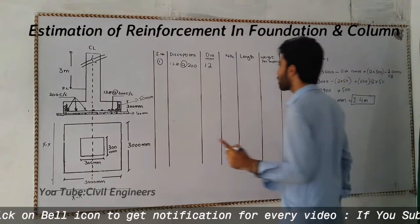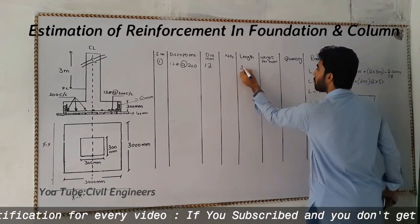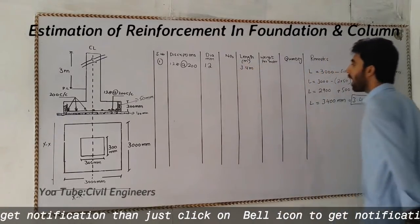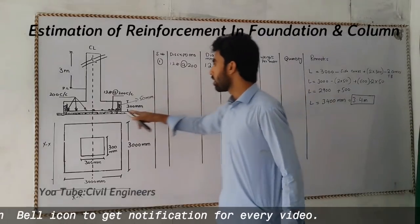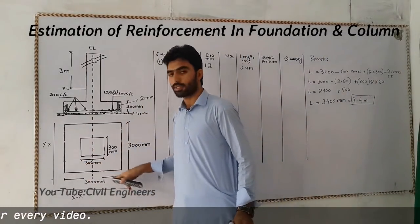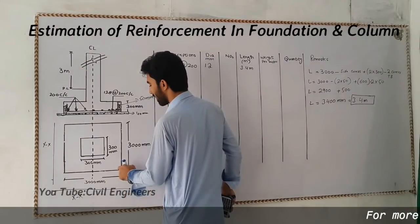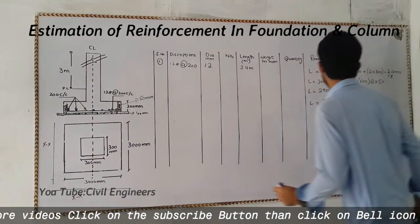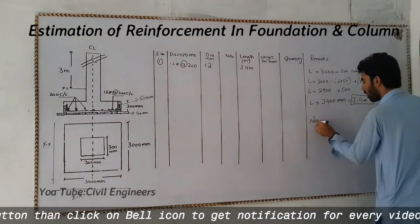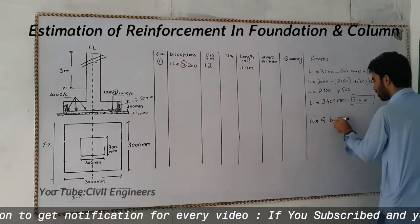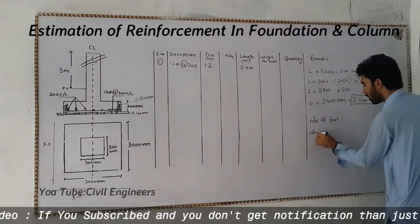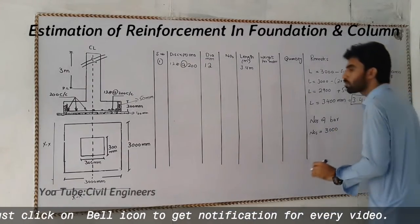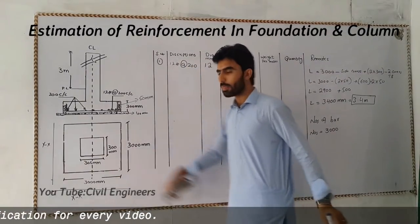Now I will find out the number of steel bars required along the x-axis — how many bars are needed along the x-axis. For the number of bars, I will use 3,000 mm as the length of the x-axis.